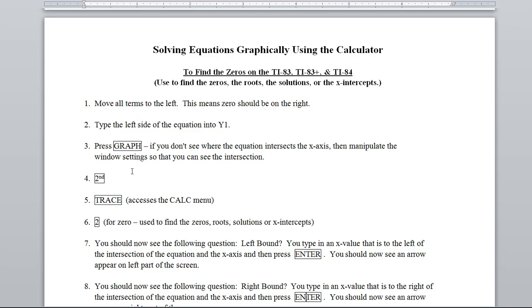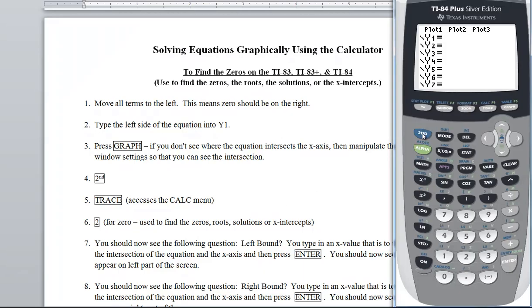Then we're going to press second trace. We've done second trace before for the calc menu when we were finding minimum and maximum. Well here's number two, zero. That's what we're going to be pressing. And this is used to find the zeros, roots, solutions, or x-intercepts.